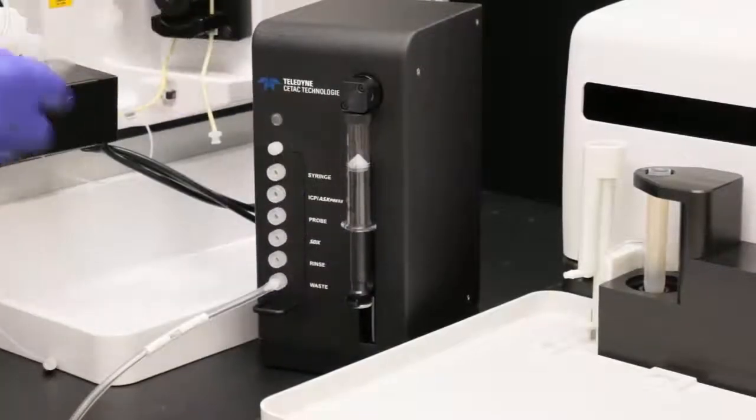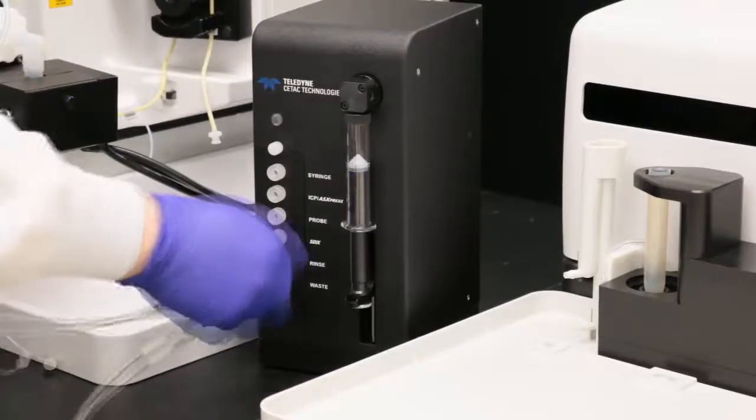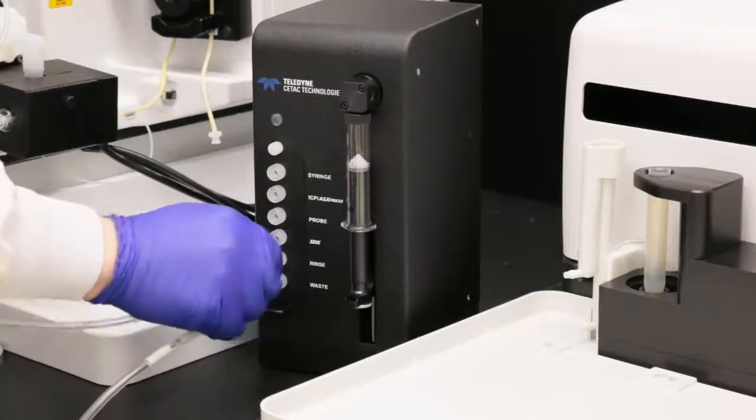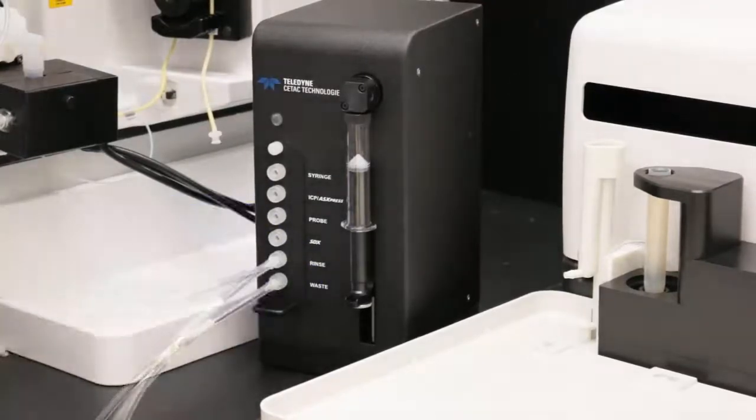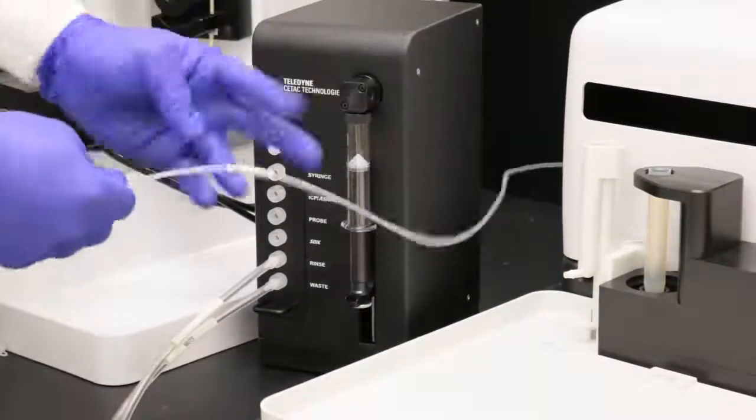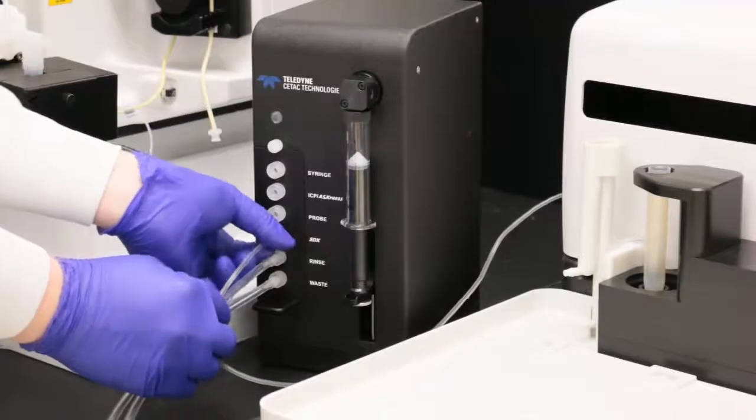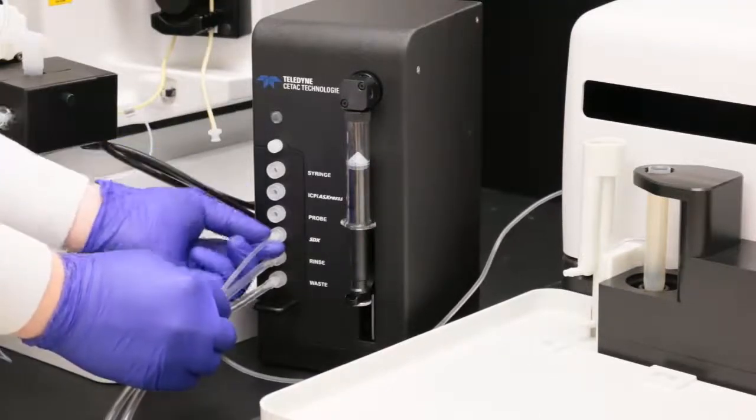Locate the rinse tube. Connect the rinse tube to the rinse connector. Place the other end of the rinse tube in the bottle of Vortex Vessel Rinse Solution. Connect the Vortex to SDX tube to the SDX port. This is the tube connected from the bottom of the Vortex Vessel.